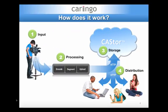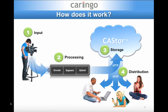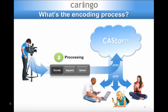Here's how it works. Begin with live or pre-recorded audio and video. The media is sent to a standard server with processing software that encodes, segments, and uploads it. Once processed, the video is uploaded to a Castor storage cloud for preservation and distribution. Because Coringo's software and Apple's live streaming technology both use HTTP as their native interface, content can be distributed to end users directly from storage.